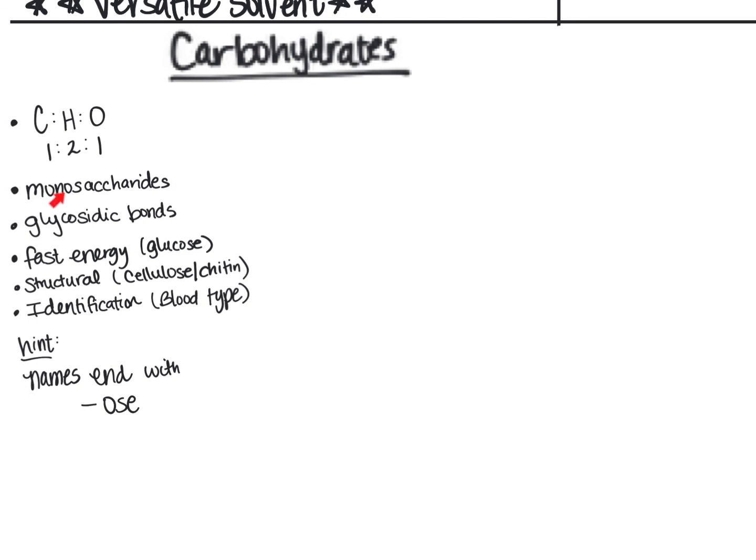So this is the basic carbon skeleton of a hexose. This right here is the oxygen and then every corner here, every point represents a carbon. And so